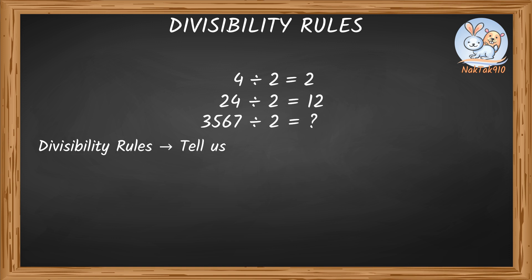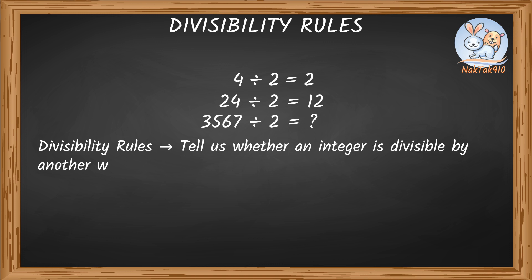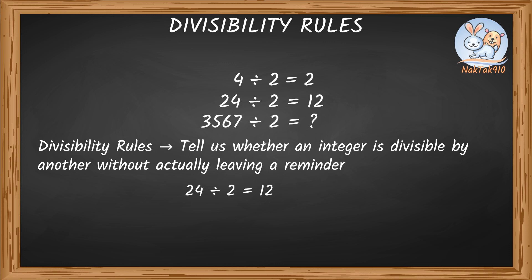These are sets of rules, or shortcuts, that tell us whether an integer is divisible by another without actually leaving a remainder. So divisible means dividing a number without any remainder? For example, 24 divided by 2 equals 12, with the remainder of 0. This means 24 is divisible by 2. That's absolutely right.